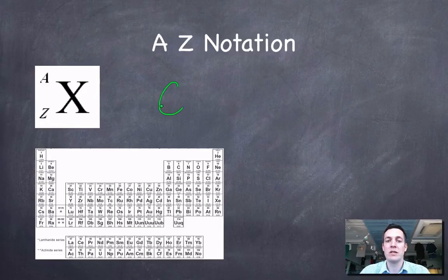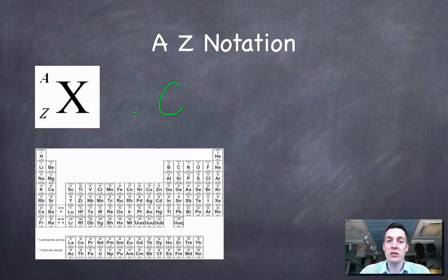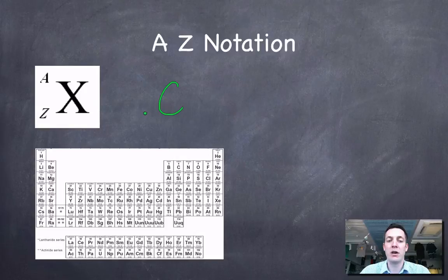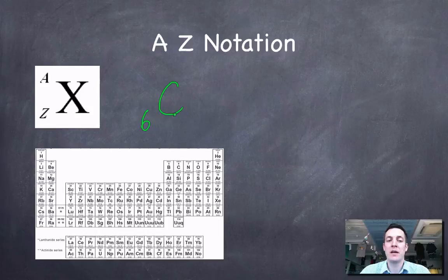Now, all atoms of carbon, by definition, have six protons. And we can say that the atomic number of carbon is six. We define an element by its atomic number. And the atomic number Z is equal to the number of protons.